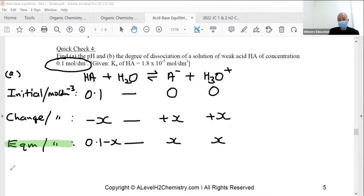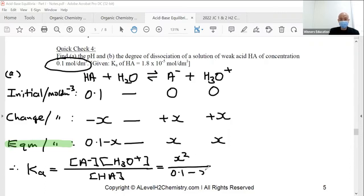And from there, we apply the K expression. So Ka equals to right over left, the right-hand side over the left-hand side. Very easy. Which is X squared divided by 0.1 minus X.